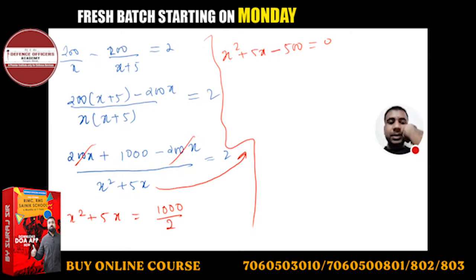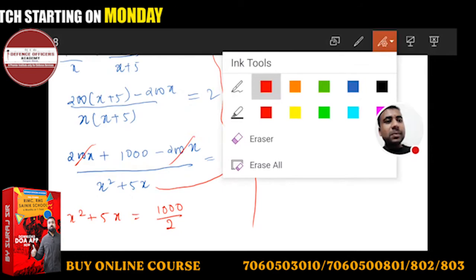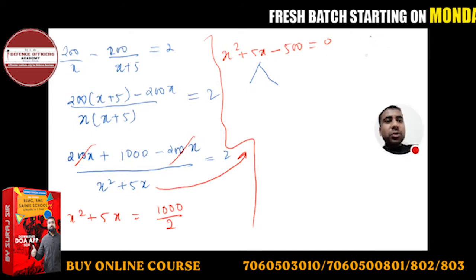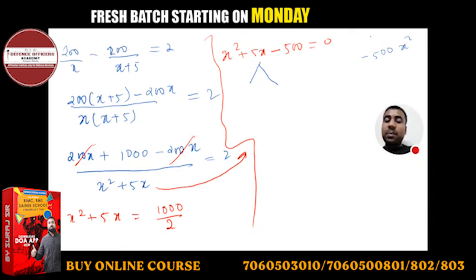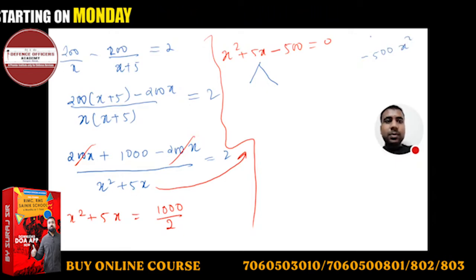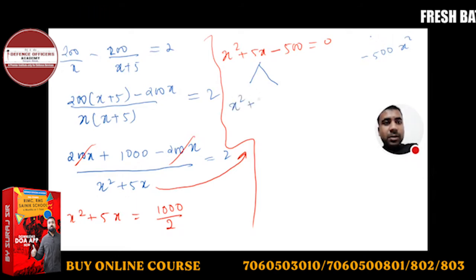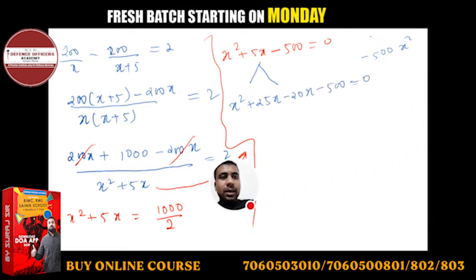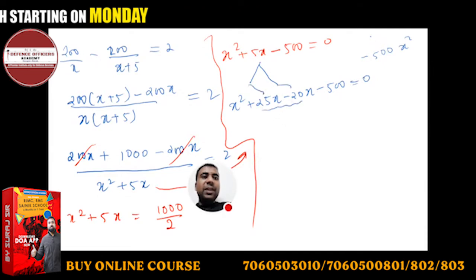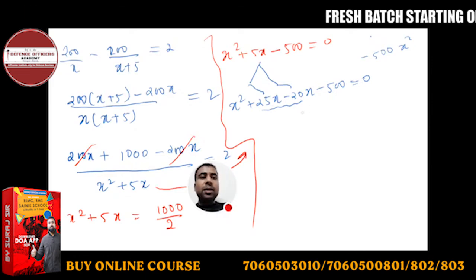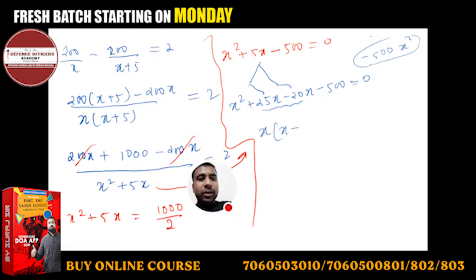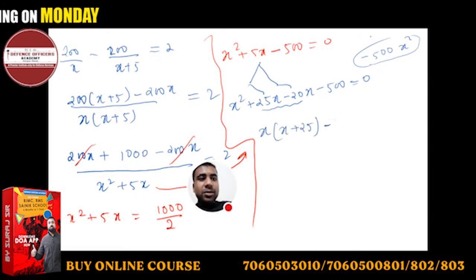Now solve the quadratic equation by splitting the middle term. We need to split 5x such that the product equals minus 500 times x squared. So we write x squared plus 25x minus 20x minus 500 equals 0. Taking x common gives x(x plus 25).